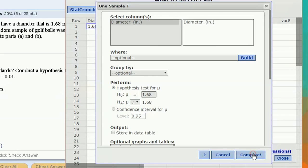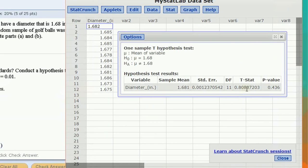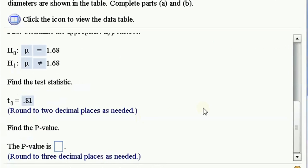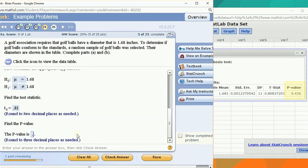Click Compute and we get our info. We have a t-stat of 0.808. Take two decimal places, that's 0.81. And the p-value, it's right here, 0.436.